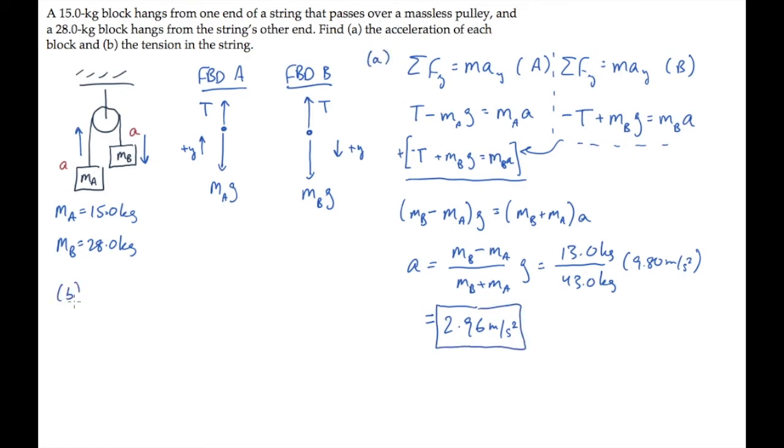Part B asks us to find the tension in the string. We can do this by substituting values into either of the F equals ma equations, for A or B. Let's take the equation for A and solve it for the tension. So we get mass of A multiplied by the acceleration plus g. Substitute values and calculate to find the tension is 191 newtons.